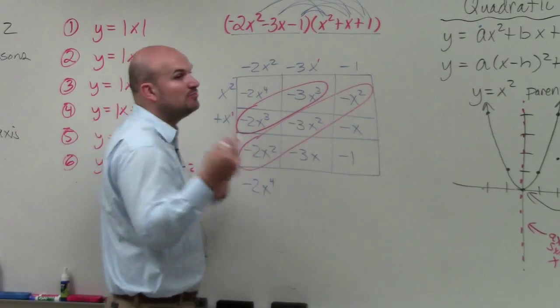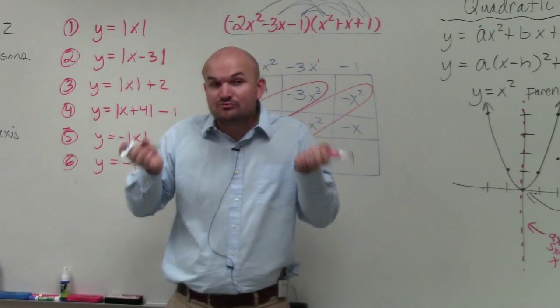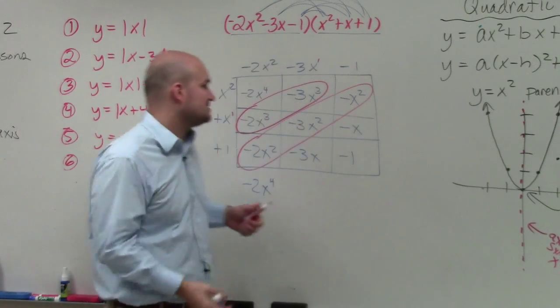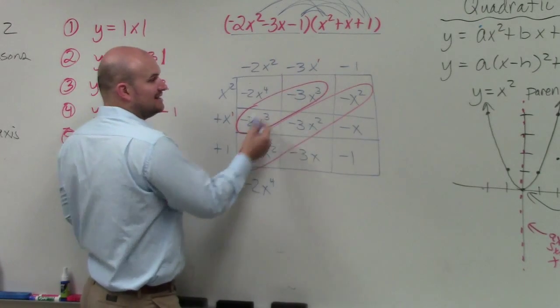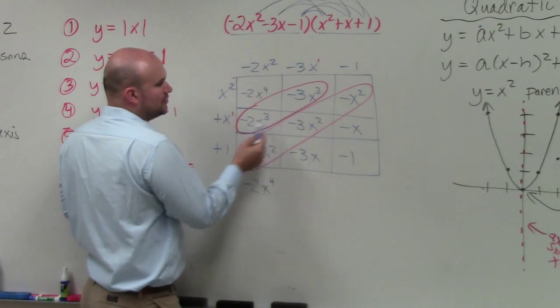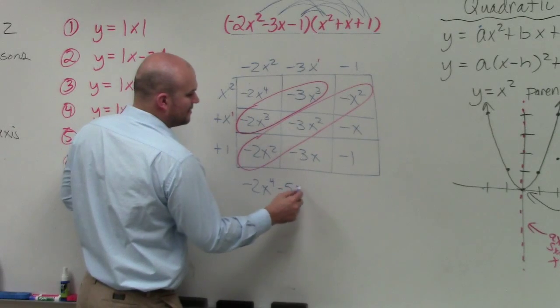Because remember, when you're multiplying, you only have to have the base being the same. But when you're adding and subtracting, you have to have the base and the power be exactly the same. So I can combine these, I just add the coefficients. So negative 3x cubed plus negative 2x cubed is going to be negative 5x cubed.